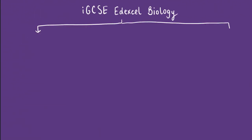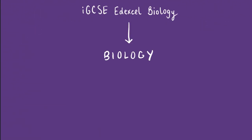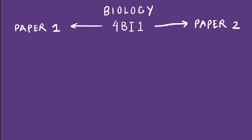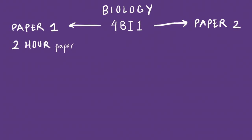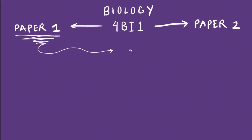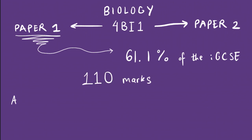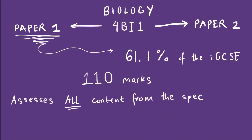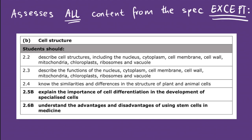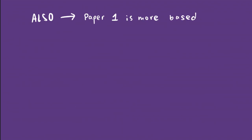Moving on, let's look at the first subject, which is biology, also known with the codename 4BI1. This subject has two papers — paper 1 and paper 2. Paper 1 is two hours long and constitutes 61.1% of the total IGCSE. It's for 110 marks and it assesses all of the content from the specification except everything that is bold or has a B reference. Paper 1 is more based on textbook knowledge — it's not that practical.